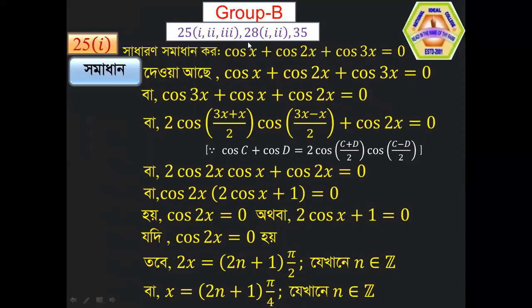A group of mathematical problems has two main characteristics. In this area, we can see three-term sine and cosine expressions. A three-term expression can be all sine or all cosine terms, or any two terms can be sine and the remaining one cosine, or vice versa. The second characteristic is that the three terms must have angles in arithmetic progression.